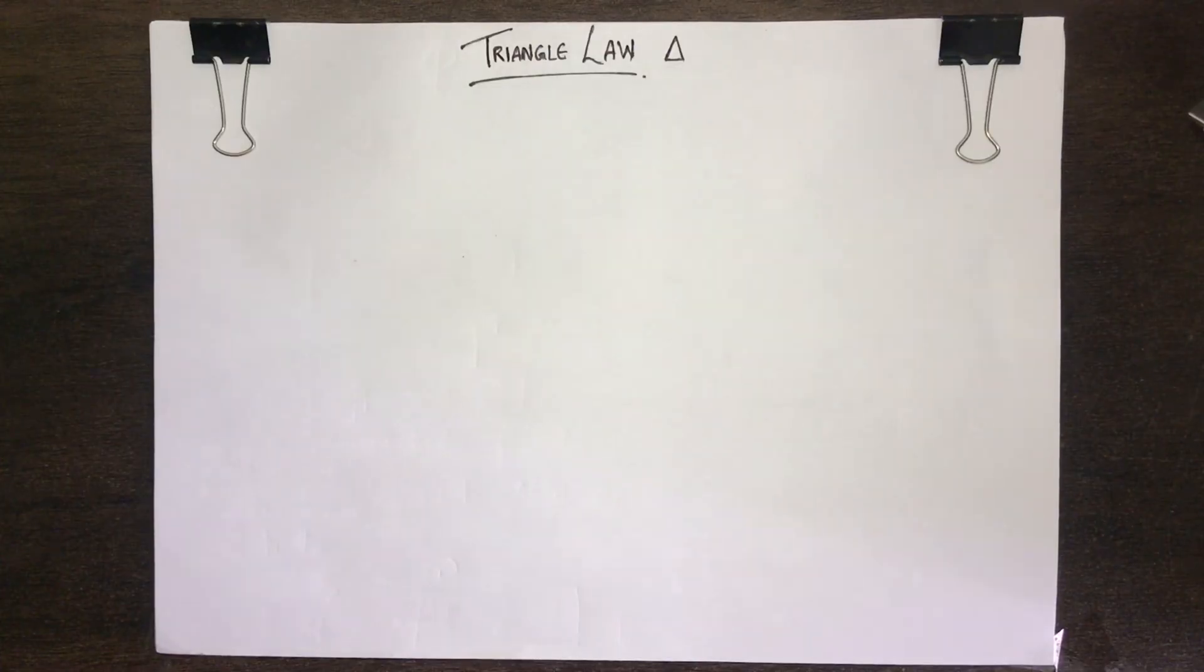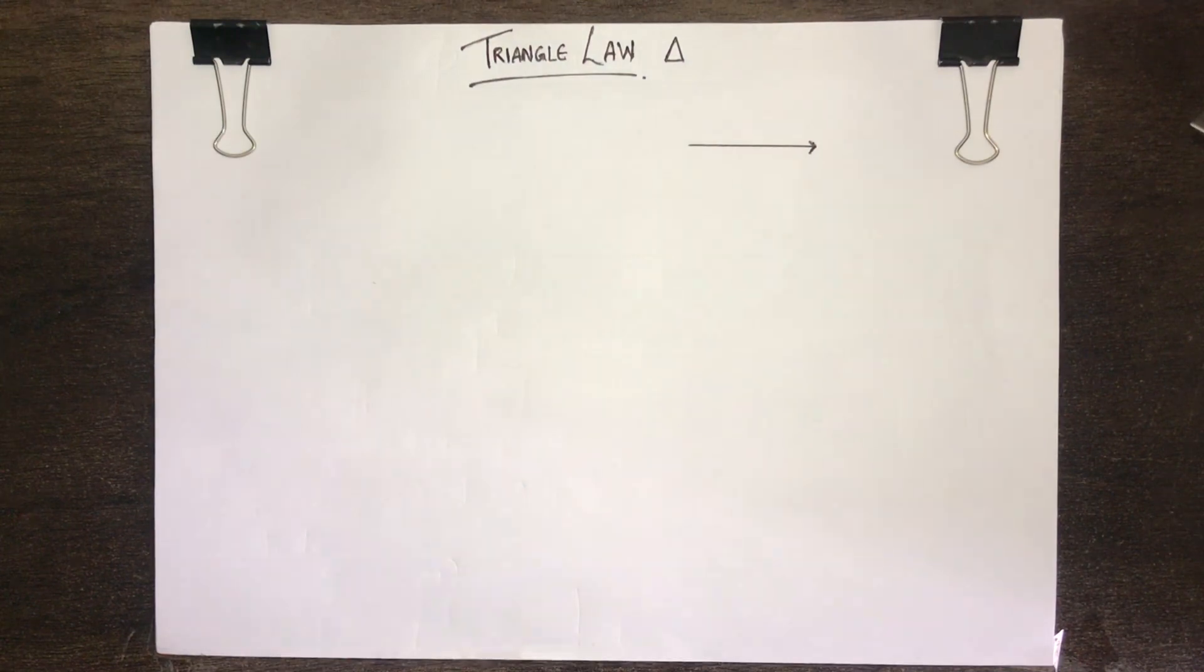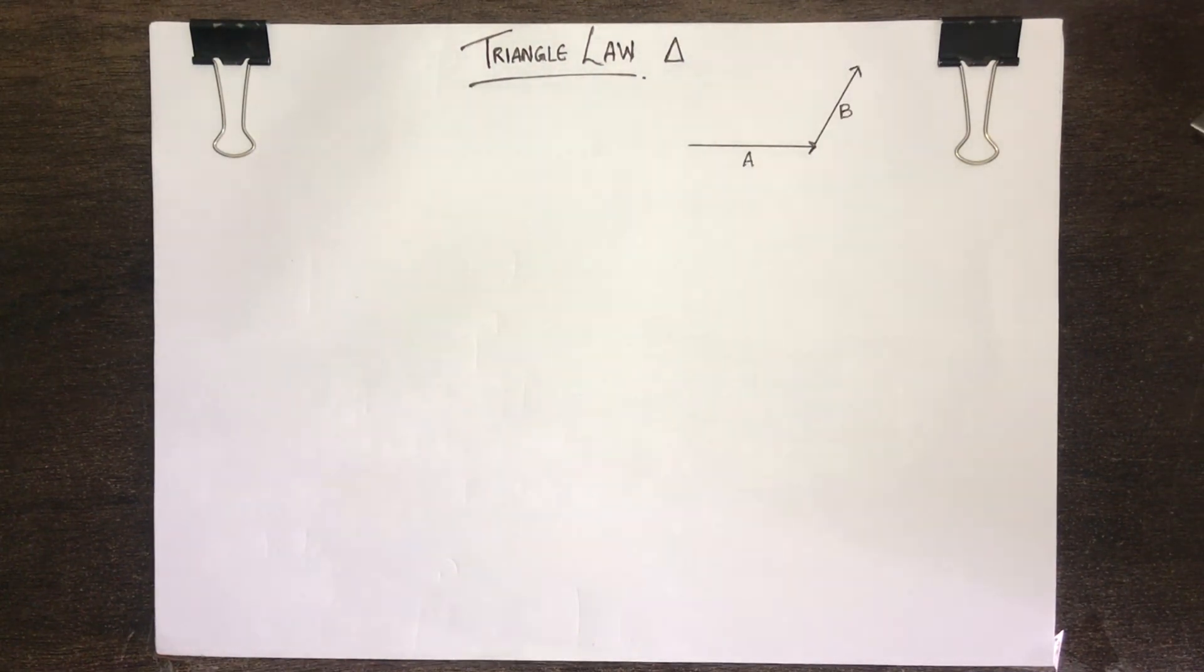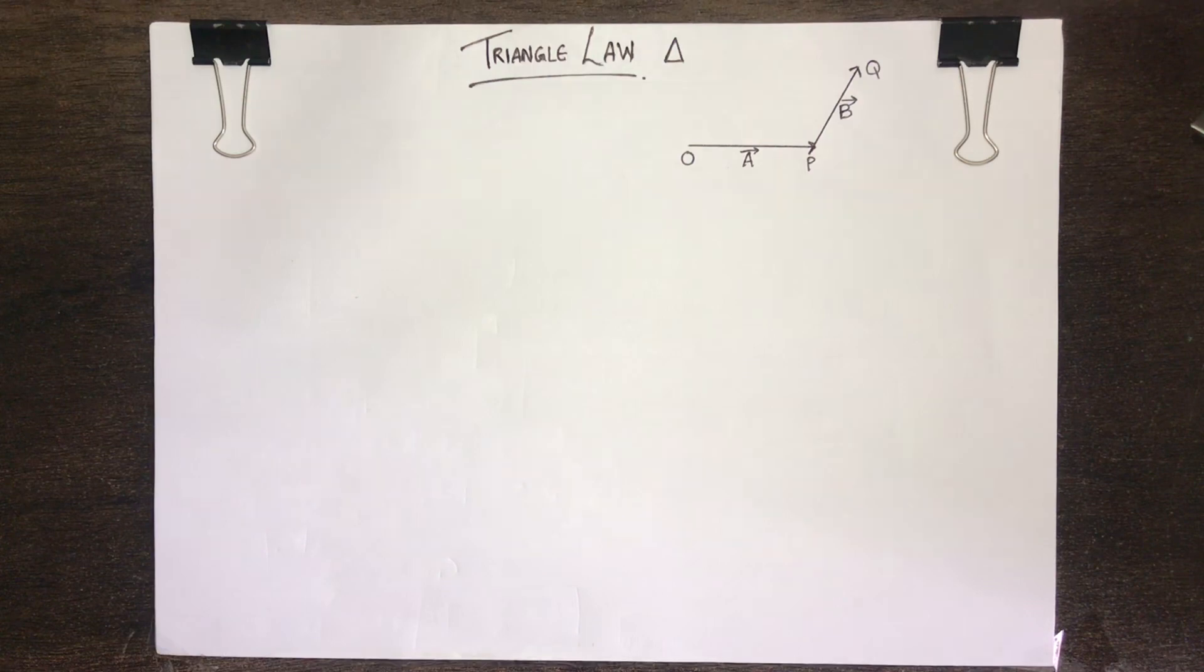Let the two vectors A vector and B vector be represented both in magnitude and direction by the sides OP and PQ of a triangle OPQ. Now according to the triangle law of vector addition, if two vectors are represented in magnitude and direction by the two sides of a triangle, then their resultant is represented by the third side of the triangle taken in the opposite order.